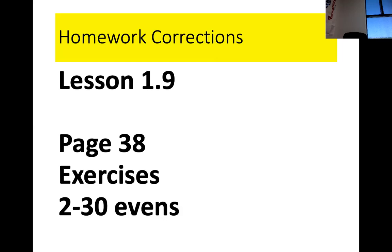I want you to notice the difference between 6 and 8. Number 10 is the first one where we have absolute value symbols. See how they look similar to brackets — they are not brackets, they are absolute value. Number 12 is 11. 14 is 1. 16 is 5.6. 18 is a half. 20 is 0.